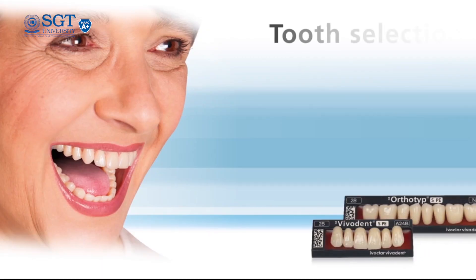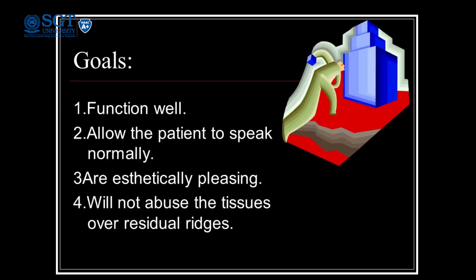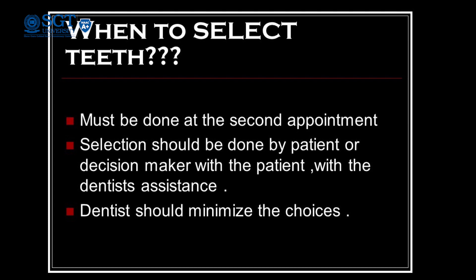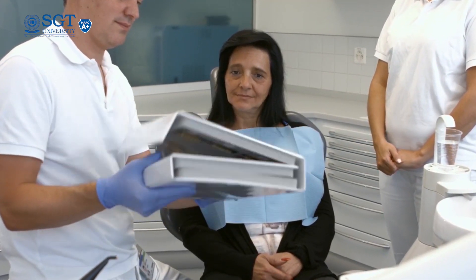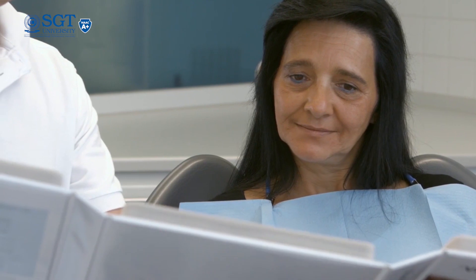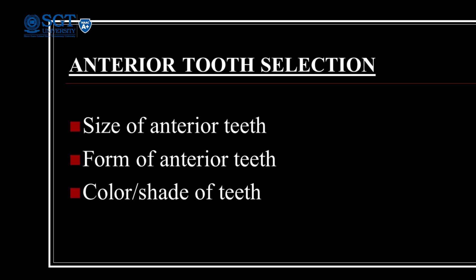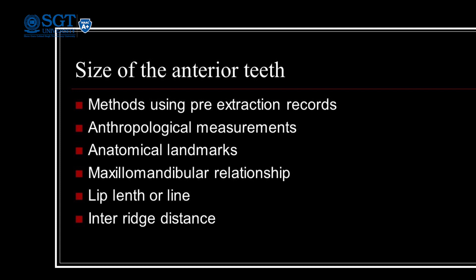Now we are done with the demonstration part of anterior teeth arrangement. Now we will talk about how these anterior teeth are selected for a complete denture patient. Anterior teeth play an important role in the aesthetics of a patient, so aesthetics are given more importance during anterior teeth selection. The selected teeth should function well, allow the patient to speak normally, be aesthetically pleasing, and should not abuse the tissue over the residual ridge. Anterior teeth should be selected at the second appointment, with the patient or decision maker involved, with dentist assistance. Anterior teeth are selected on the basis of size, form, and shade.